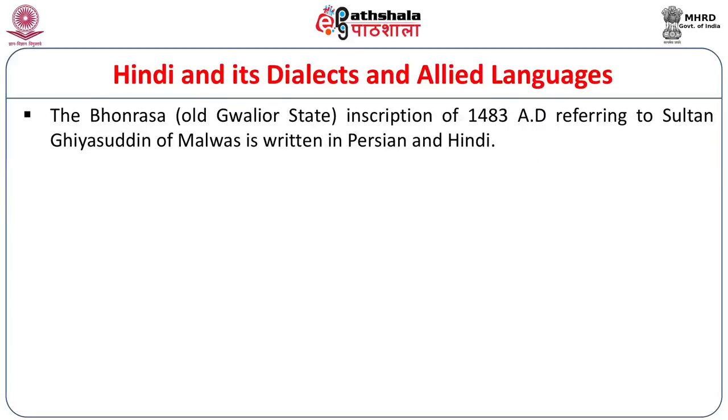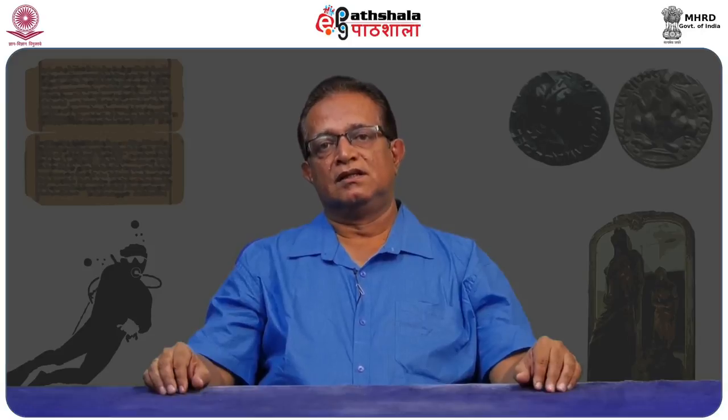The Bonrasa inscription of 1483 AD, referring to Sultan Ghiyasuddin of Malwa, is also written in Persian and Hindi. We have a number of bilingual inscriptions written in Arabic and Persian, and for the benefit of the local population, they are also written in local dialects and many a time in Sanskrit. There are trilingual, bilingual, biscriptal, and triscriptal inscriptions through which they want to communicate. Even during the pre-colonial period we have inscriptions written in English, so that the message could be conveyed in different languages that the local populace were aware of.